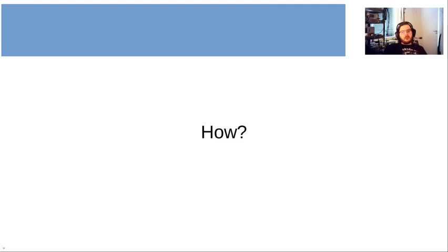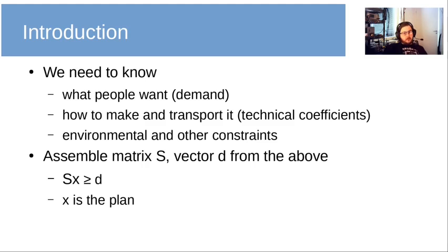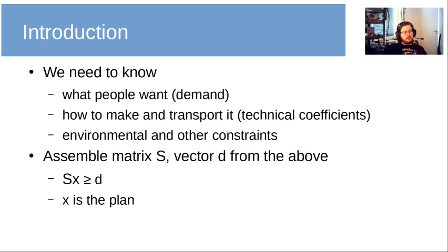Part two is all about how. First of all we need to know a couple of things. We need to know what people want, which is the vector of demand. We need to know how to make these things and how to transport them, which are what's known as the technical coefficients. We also need to know the environmental constraints and any other constraints, which may come from the political system, for example. From these we can assemble the system matrix S and a vector D, and we form the system of inequalities S times X greater than or equal to D. This X that we're looking for is the plan.